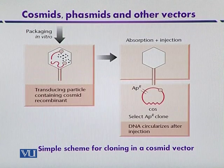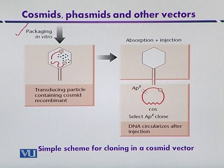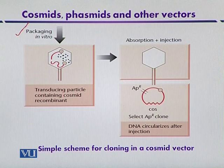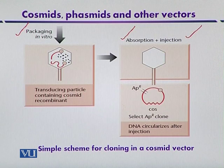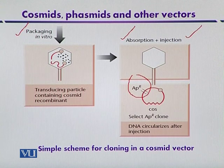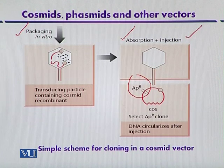Once foreign DNA is inserted into the cosmid vector, this recombinant cosmid vector, in the presence of the in vitro packaging system, can be enclosed within the phage head. It is then ready to infect a suitable host organism. After adsorption and injection into the host organism, the recombinant host organisms are selected on the basis of the ampicillin resistance marker. After injection, the cosmid assumes the circular form, as observed with the lambda genome.